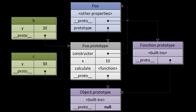So foo is a function, and this is the foo prototype. Foo prototype created two objects, b and c, having y equal to 20 or 30. The proto of the foo function is pointing to the Function prototype — capital F — and whose proto is pointing to the Object prototype.